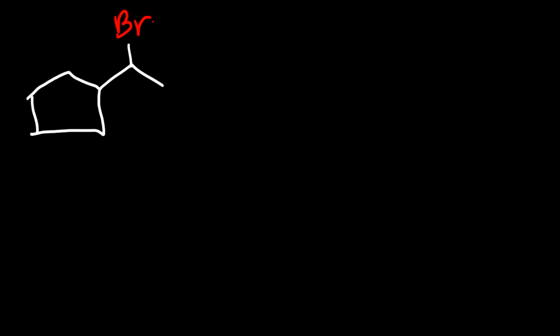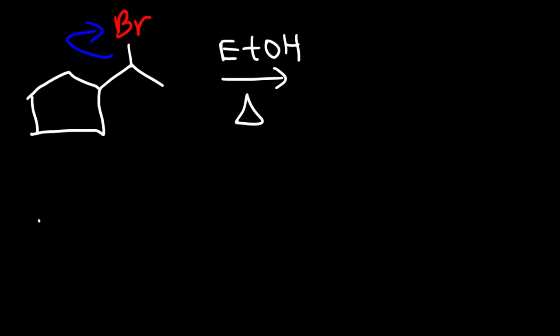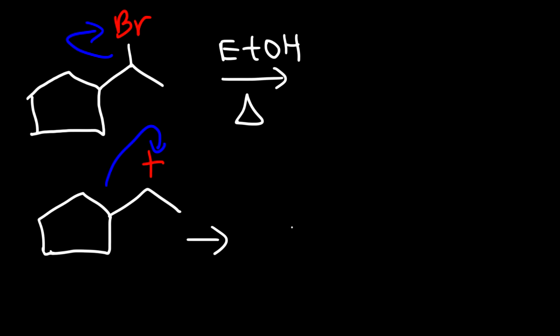Now let's work on one more example. Draw the major E1 product for this reaction — we'll react it with ethanol and heat the solution. We have an alkyl halide, so the first thing that happens is the leaving group leaves. Bromide is a good leaving group, so we don't need to add a hydrogen to it. Notice that we have a five-carbon ring next to a carbocation — when you see that, a ring expansion will occur. The driving force for that is stability: a six-carbon ring is more stable than a five-carbon ring.